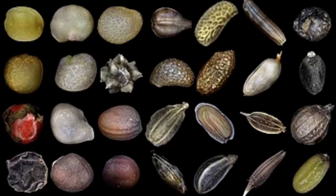Trees follow the same life cycle as other plants. Just like that of a flower, a tree's life cycle begins with a seed. Tree seeds can be as large as tennis balls or as tiny as freckles. They come in various shapes and sizes. They can be flat, smooth, bumpy, long, or thin.